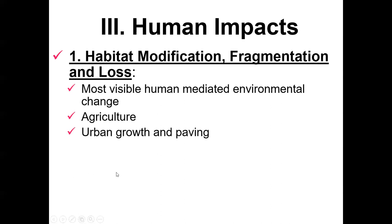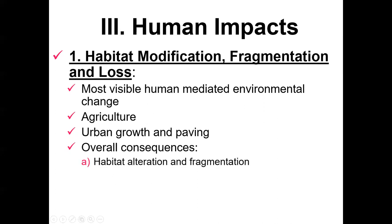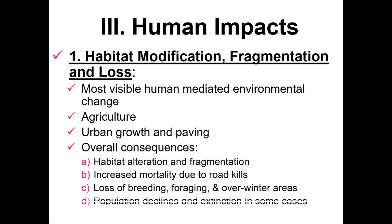Urban growth and urban sprawl are probably even outpacing agriculture in most areas now. The overall consequences of habitat alteration are that it can effectively impact dispersal, creating dispersal barriers of unsuitable habitat — things like roads, agriculture areas, and large housing developments. It increases mortality due to road kills, loss of breeding sites, foraging habitat, and overwintering areas, as well as inciting population declines and extinction in some cases.